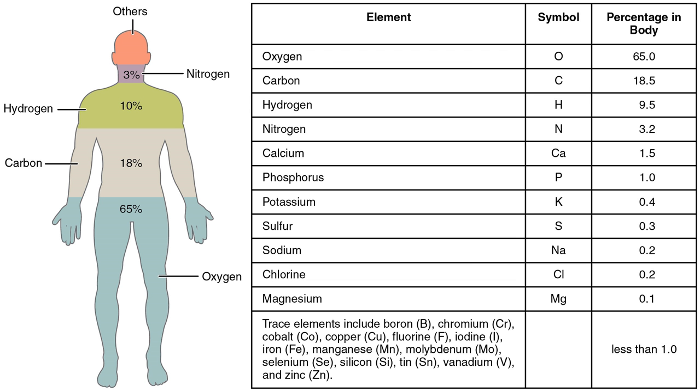The average 70 kg adult human body contains approximately 7 × 10^27 atoms and contains at least detectable traces of 60 chemical elements. About 29 of these elements are thought to play an active positive role in life and health in humans. The relative amounts of each element vary by individual, mainly due to differences in the proportion of fat, muscle, and bone in their body. Persons with more fat will have a higher proportion of carbon and a lower proportion of most other elements.